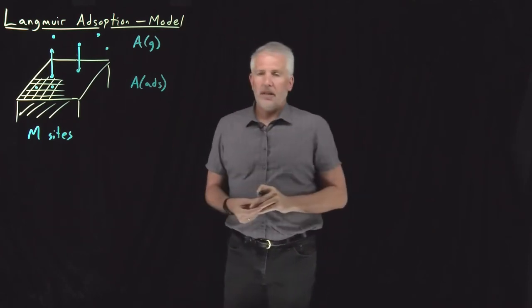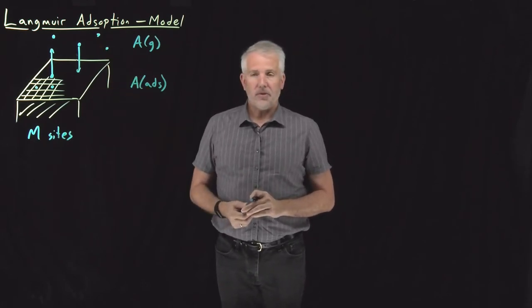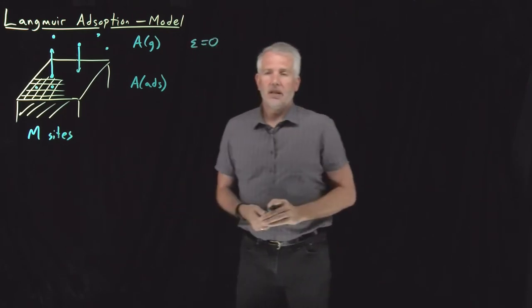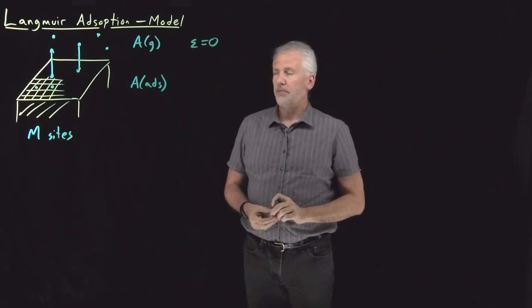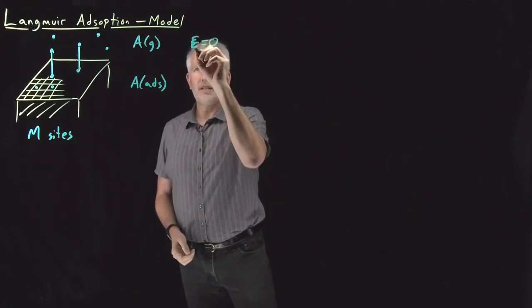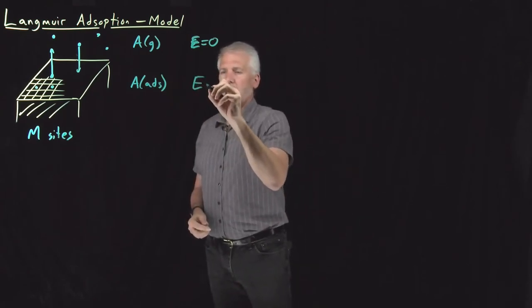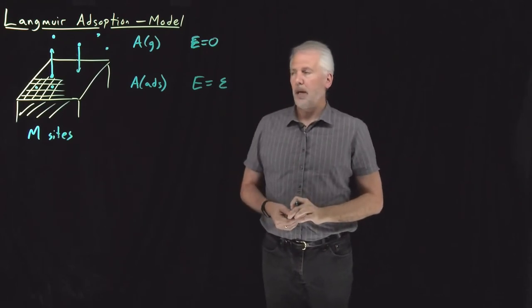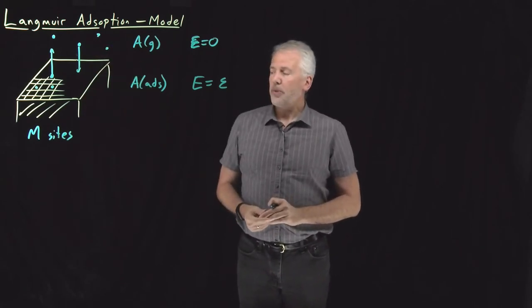We can specify what the energies are of a molecule in the gas phase or a molecule in the adsorbed phase. Those energies will, in general, be different. Just to choose a scale for the energy, I'm going to use epsilon for the energy of these molecules. I'm going to let the energy be capital E for the molecule in the gas phase. And for the adsorbed phase, I'm going to let that energy be some constant that I'll name epsilon. So when it's stuck to the surface, it has some energy. In the gas phase, it has no energy, no potential energy.